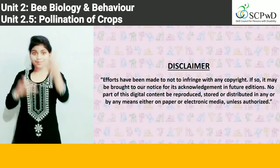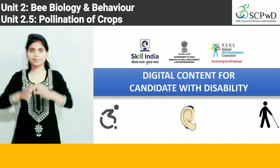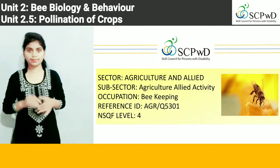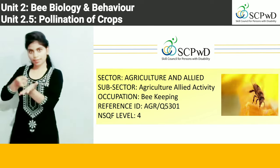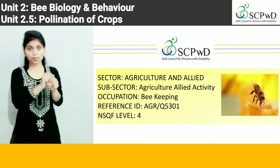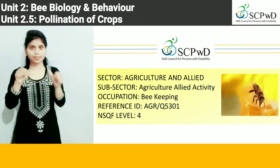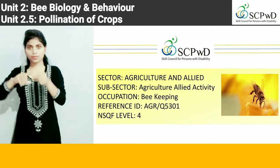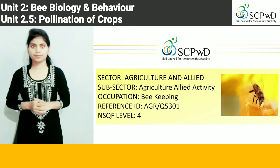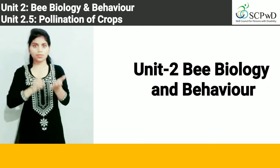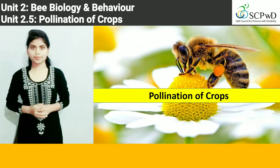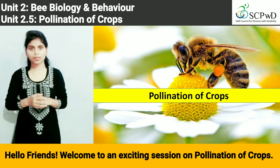Digital Content for Candidate with Disability — Agriculture and Allied Activity Occupation: Beekeeping. Reference ID: AGR/Q5301, NSQF Level 4. Unit 2.B: Biology and Behavior, Unit 2.5: Pollination of Crops.